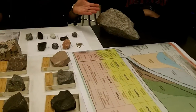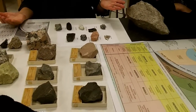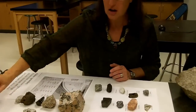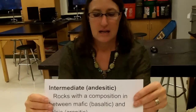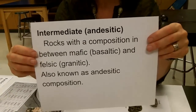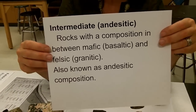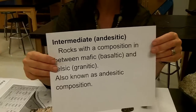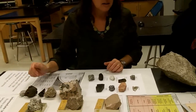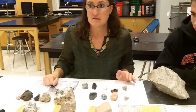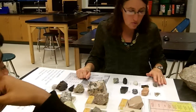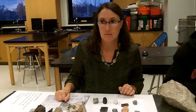And then we have neither light nor dark, right in the middle — intermediate, sometimes called andesitic. Andesitic rocks are rocks with a composition somewhere between basaltic and granitic, between mafic and felsic. Typically an intermediate rock doesn't have the most felsic minerals and doesn't have the most mafic minerals, so things like olivine would not be present in an intermediate rock, and things like quartz would not be present in an intermediate rock.